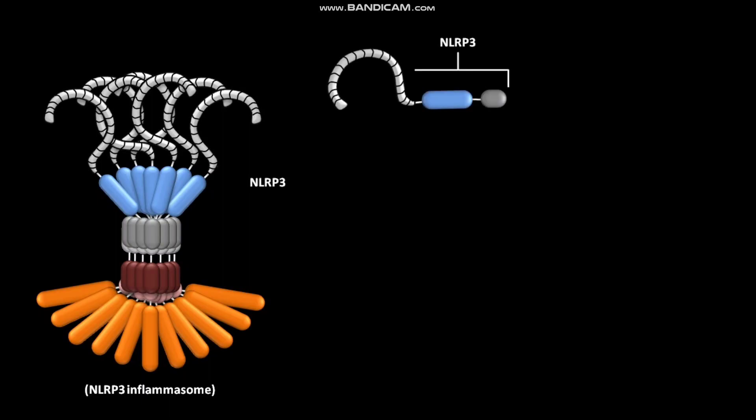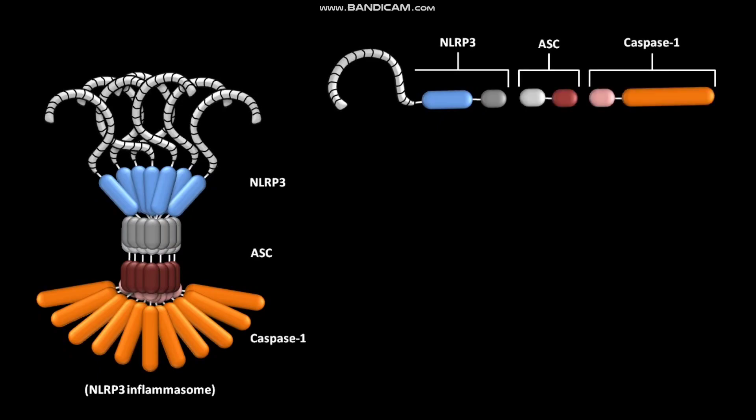This is an NLRP3 Inflammasome. The NLRP3 Inflammasome is made up of three component proteins: NLRP3, ASC, and Caspase-1.